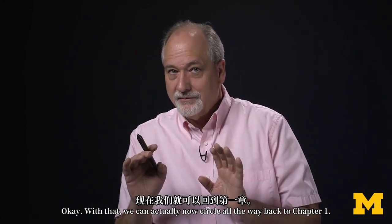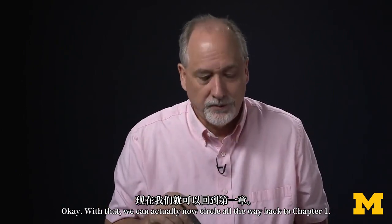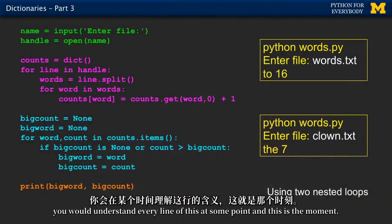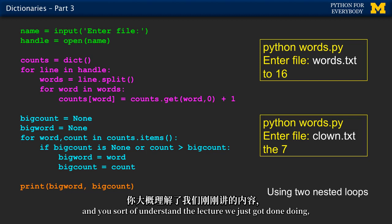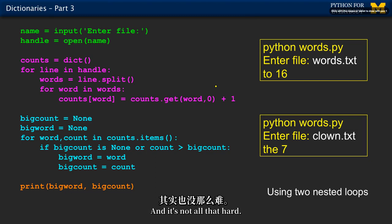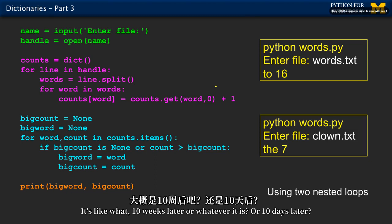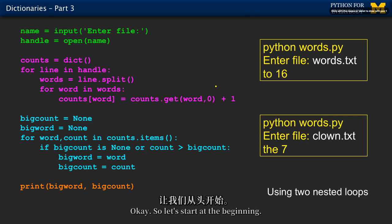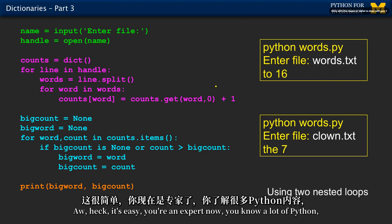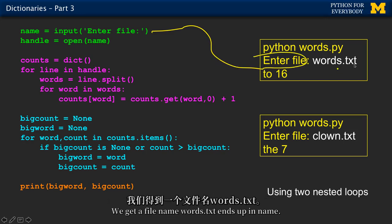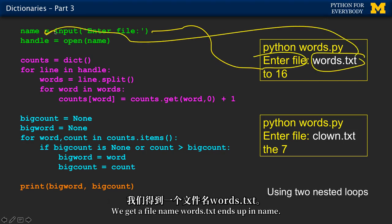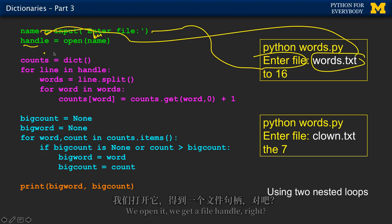With that, we can now circle all the way back to chapter one. I told you that you would understand every line of this at some point, and this is that moment. If you've been doing your homework and understand the lecture we just got done with, you should understand every single line. So let's start at the beginning. We put out a prompt, we get a file name — words.txt ends up in name. We open it, we get a file handle. We're going to make a count dictionary — the histogram pattern — so we create an empty dictionary.